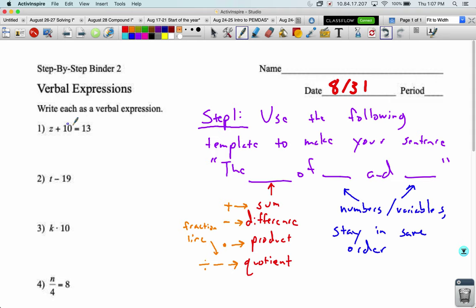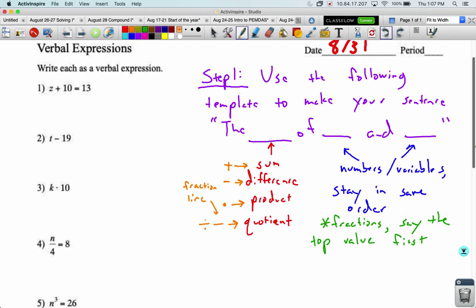Alright, now for these other two blanks, that's where the numbers slash variables from the problem go. So the numbers slash variables, and we're just going to say they've got to stay in the same order. So looking at problem number one, the z and the 10, we're going to say the sum of z and 10. Now, there's one situation where there's not really an order, and that's with fractions. So with fractions, say the top number first. Or the top, we'll call it a value, because it could be a number or a variable. So say the top value first.